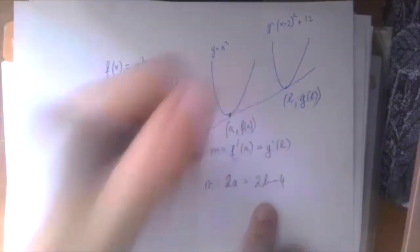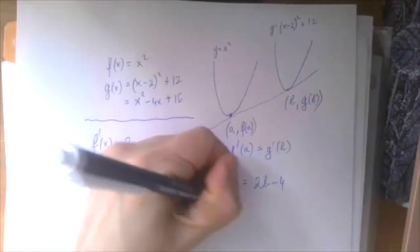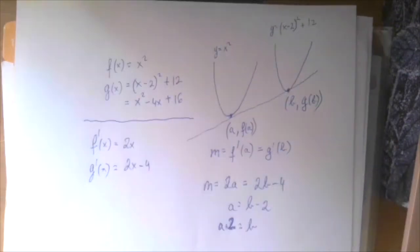And for the common tangent lines, that slope should be the same. So 2a equals 2b minus 4, meaning B is A plus 2. This is a very nice connection between the two unknowns.